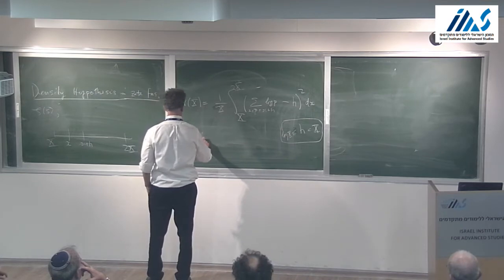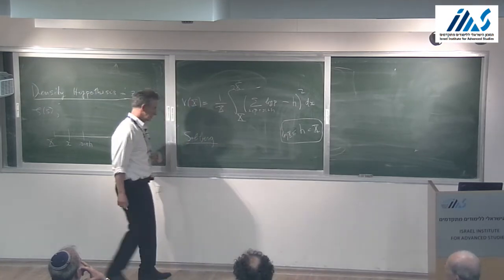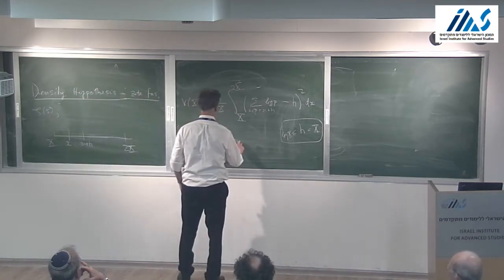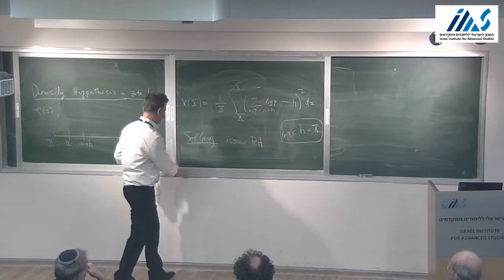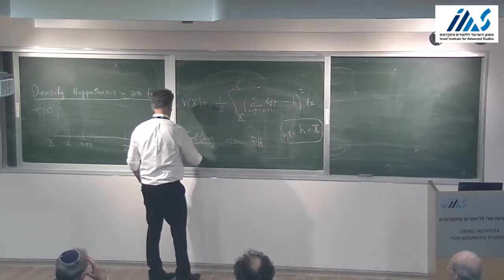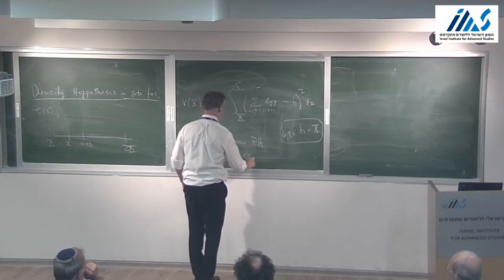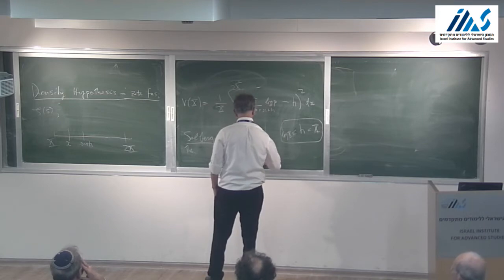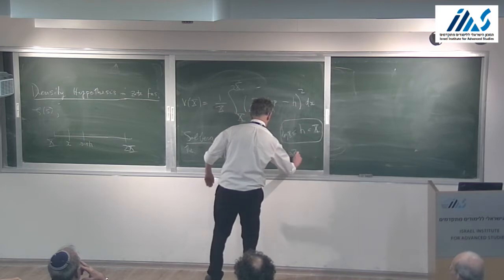Selberg—many things start with him—in the 1940s proved the following: assume the Riemann hypothesis for the Riemann zeta function. Then V(x) is less than a constant times h · (log x)².